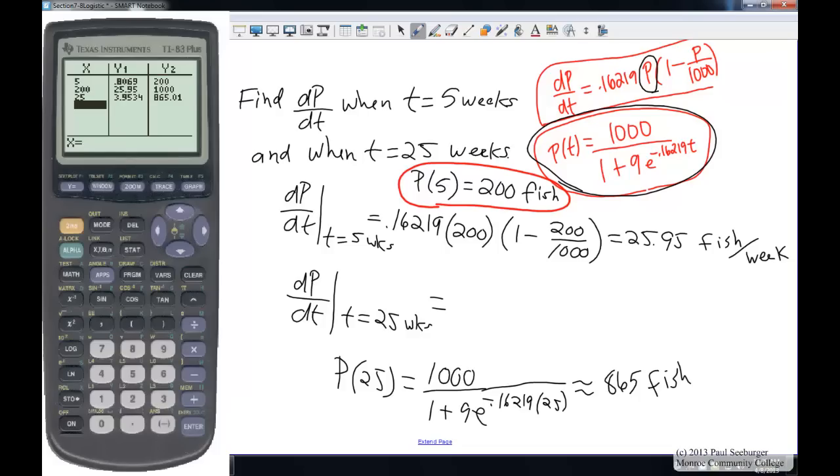Okay, so we plug the 865 into our differential equation dp/dt and we have .16219 times our population of 865 fish times 1 minus 865 over 1,000. Okay, well, let's go ahead and plug it into our calculator here and see what we get. We put 865 fish in. Y1 again represents our rate of change. Y2, of course, after 865 weeks we're still at our carrying capacity, that's not interesting. But the 18.94 here is interesting. This would be our rate of change after 25 weeks, 18.94 fish per week.